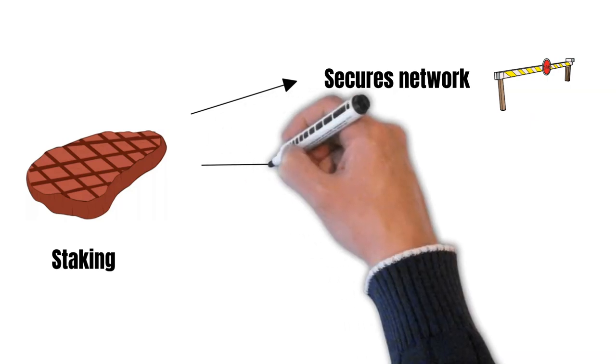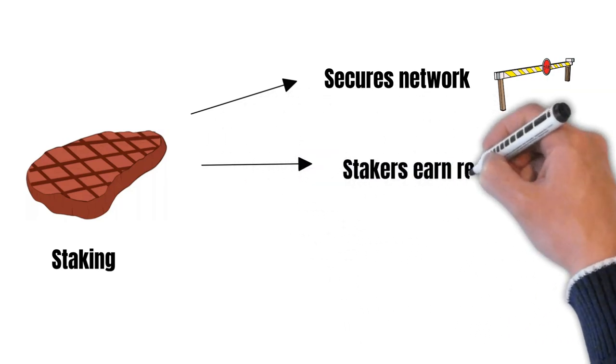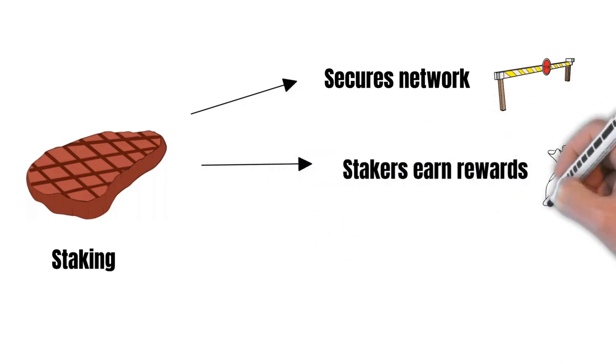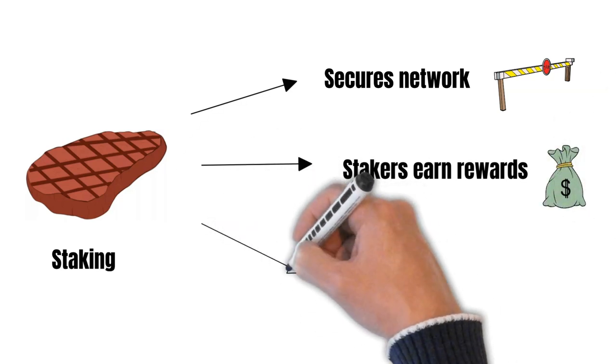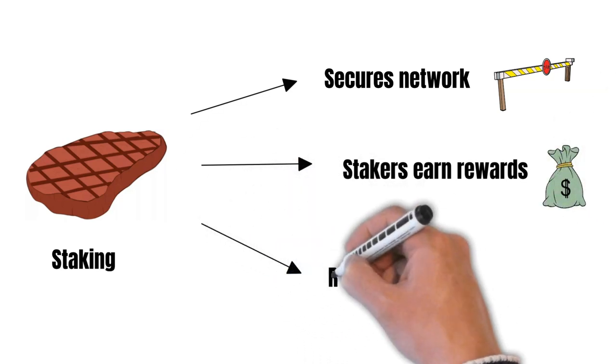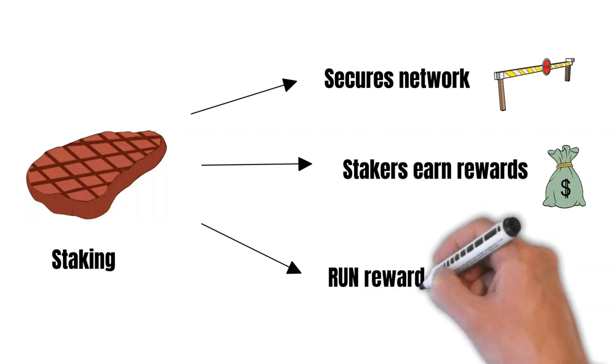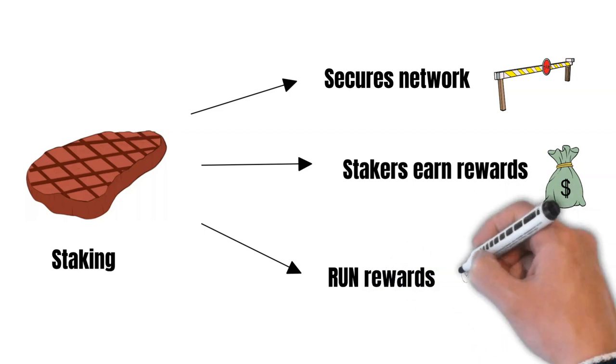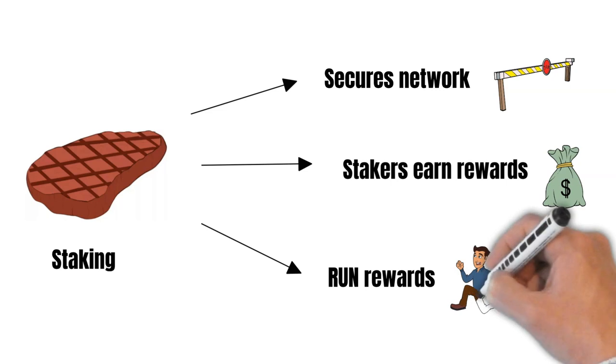Stakers of BLD secure the network and earn staking rewards because of it. But, it does not stop here. BLD holders also get rewarded in RUN based on their BLD holdings. All the RUN implementations will produce fees like the vaults, AMM and the IBC pegging area.